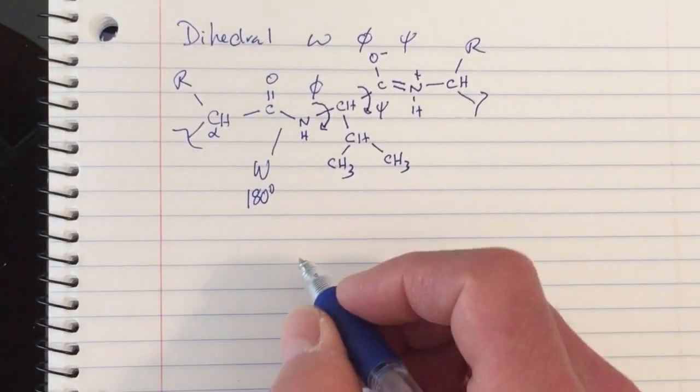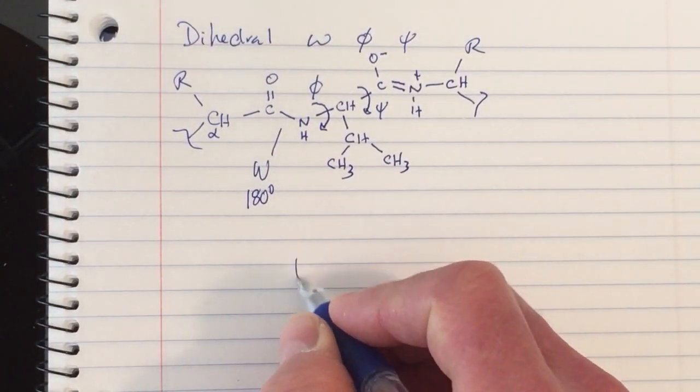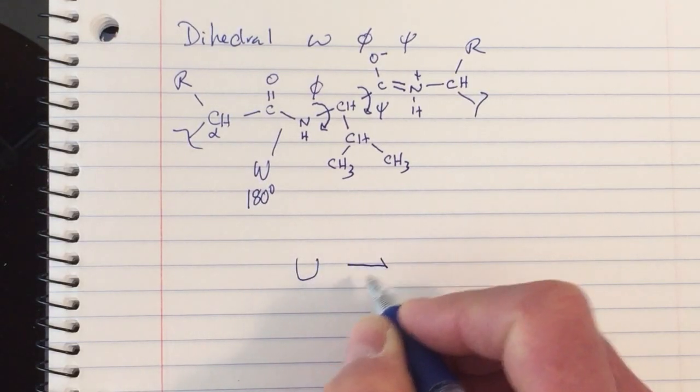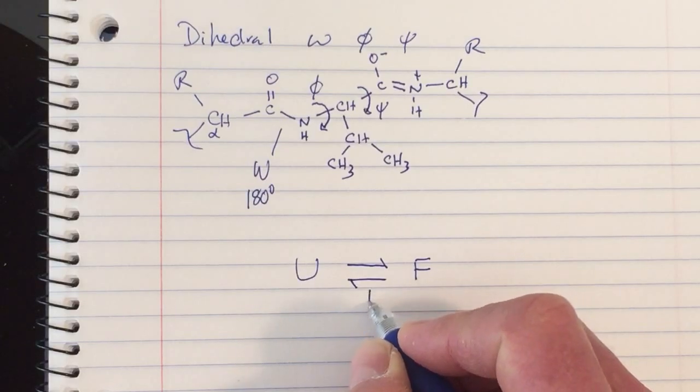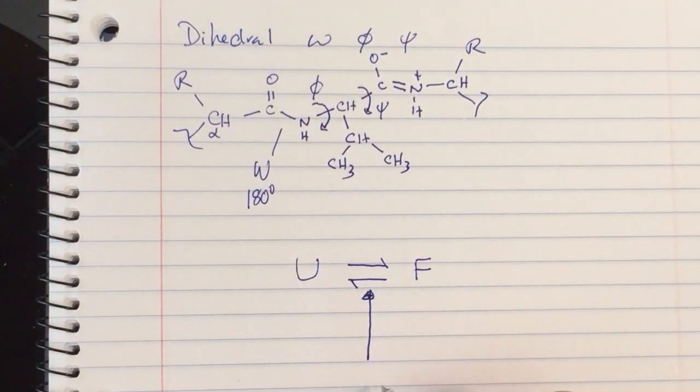We can draw in our concept map: before protein folding we have the unfolded state and the folded state. We know that chain entropy favors the unfolded form of the polypeptide.